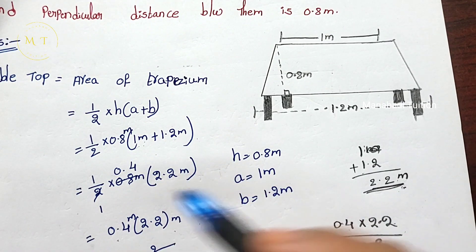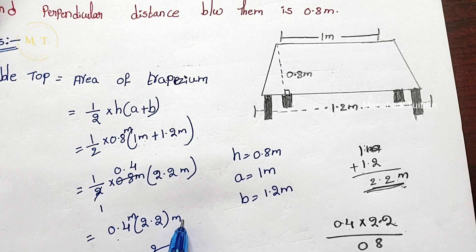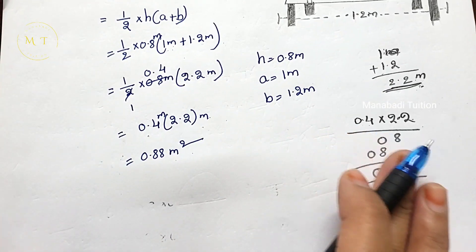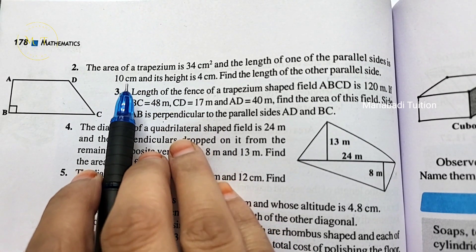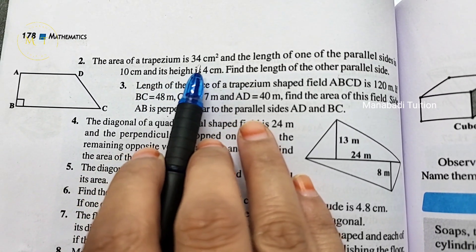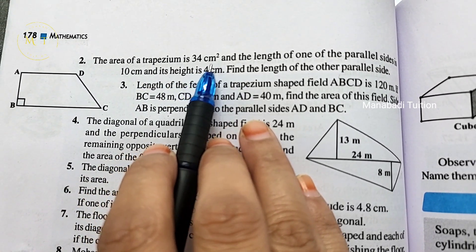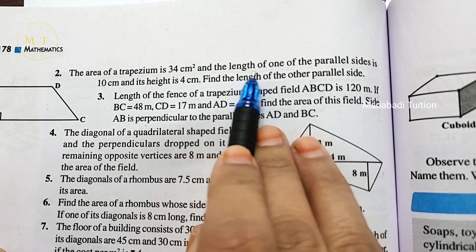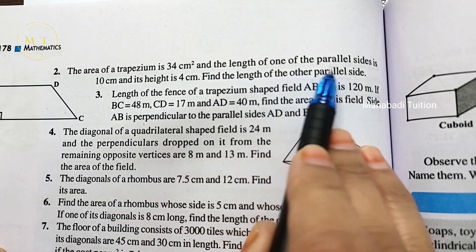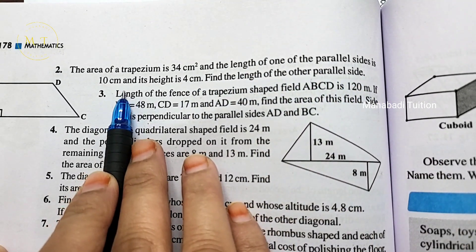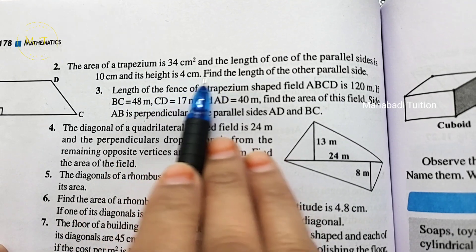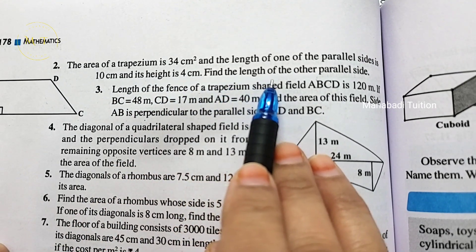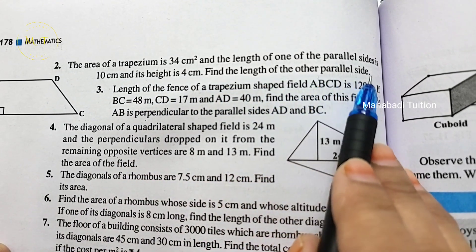If you add these numbers, you get the area in square meters. Next, second problem: the area of your trapezium is 34 square centimeters, the length of one parallel side is 10 centimeters, and its height is 4 centimeters. Find the length of the other parallel side.